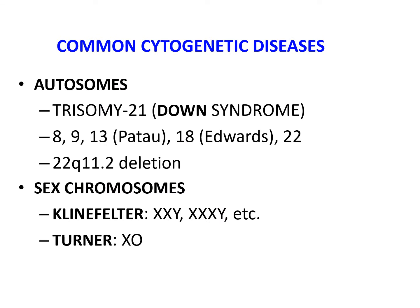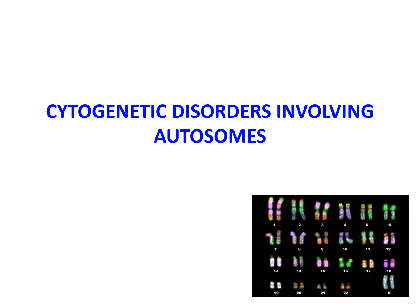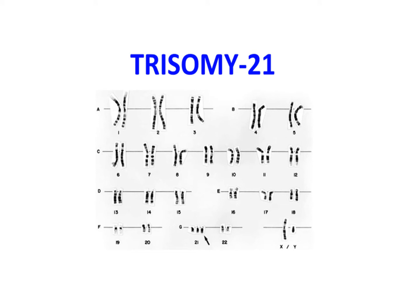Now let's go to the common cytogenetic diseases. From the autosomes, I will discuss trisomy 21 or Down syndrome, and will briefly mention Patau and Edwards syndromes, as well as the 22q11.2 deletion, and from the sex chromosomes, Klinefelter and Turner syndrome. Trisomy 21, or Down syndrome, is the most common of the chromosomal disorders and is a major cause of intellectual disability.